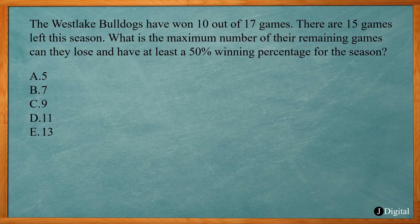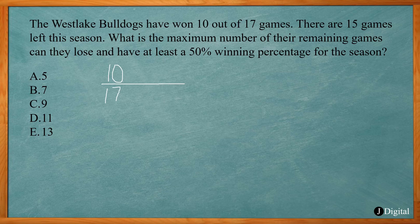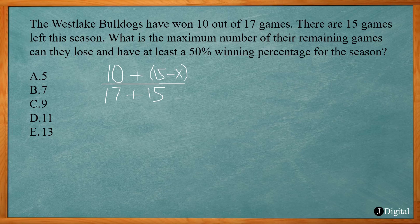This one says the Westlake Bulldogs have won 10 out of 17 games. There are 15 games left in the season. What is the maximum number of the remaining games they can lose and still have at least a 50% winning percentage for the season? We set up an equation: they've won 10, played 17, and will play 15 more, so our total is 32. We want to know the maximum number they can lose of those 15 — that's X. The wins from the remaining games would be 15 minus X, and the difference between 15 and how many they lose is how many they win.